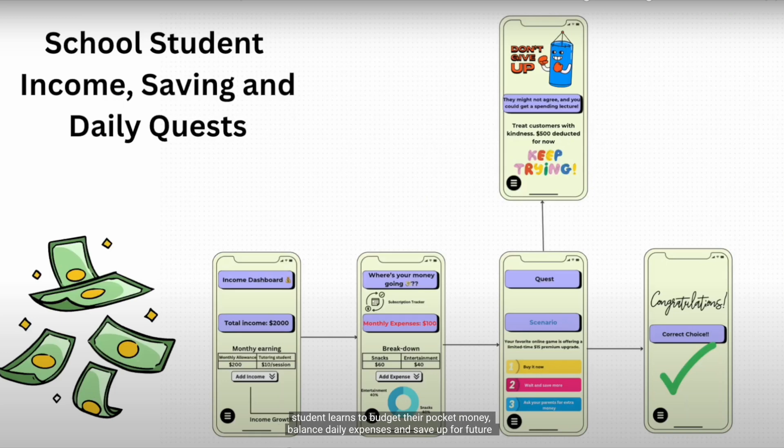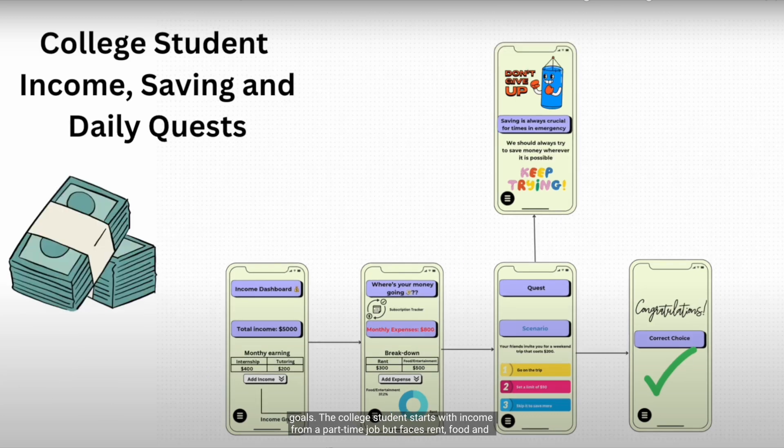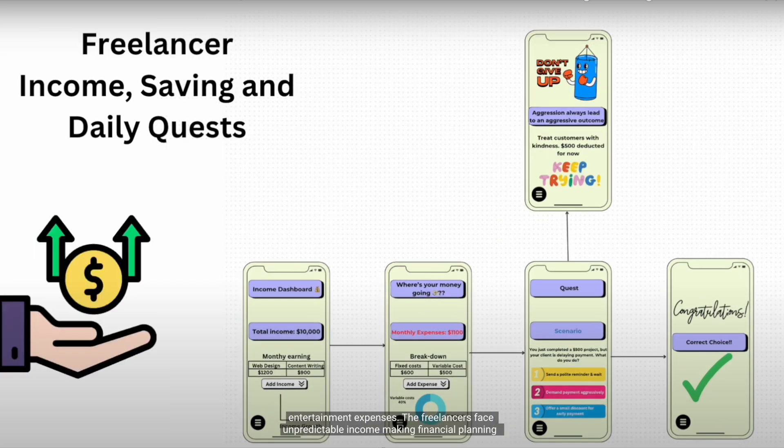The school student learns to budget their pocket money, balance daily expenses and save up for future goals. The college student starts with income from a part-time job but faces rent, food and entertainment expenses.